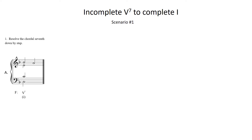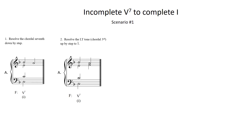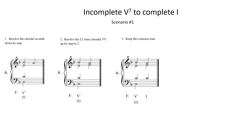First, resolve the chordal 7th down by step. In this example, that would be the B-flat in the soprano voice moving down by step to the A. Then resolve the leading tone up by step to scale degree 1, which in this example is the E moving up by step to the F in the alto voice. Next, keep the common tone in the same voice, which in this example is the C in the tenor. Notice that so far this is no different from the voice leading of the inverted dominant 7th chords that were resolved to tonic triads discussed in the prior video.